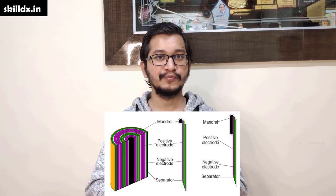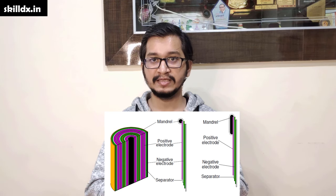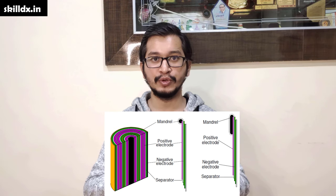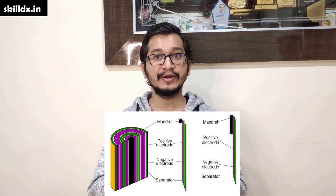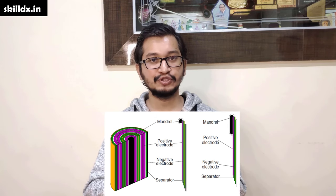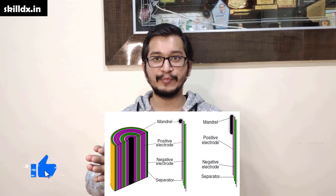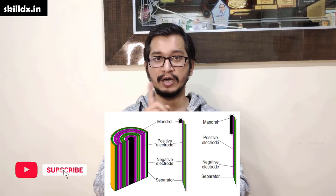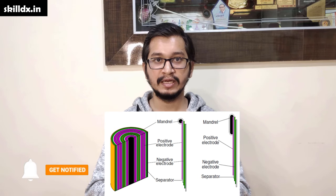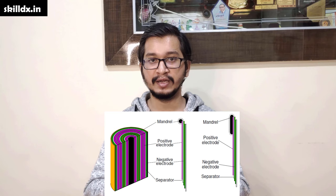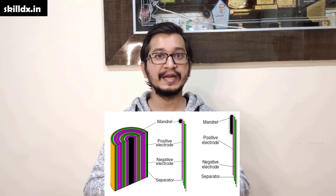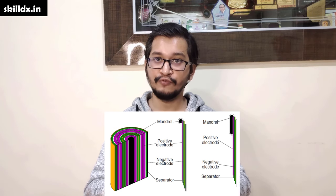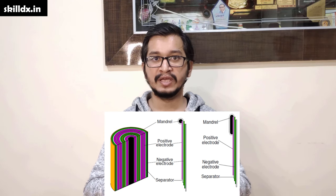Cylindrical and prismatic cells are built quite differently. In these cells there is a long negative electrode and a long positive electrode. These electrodes are cut into long strips, a separator is placed in between them, and then this sandwich of positive electrode, separator, negative electrode, and separator is wound in a spiral around a mandrel. In the cylindrical cell we wind it around a very thin cylindrical mandrel. If the central mandrel is a rectangular plate instead of a cylinder, we end up with a prismatic cell, which is present in your phone.